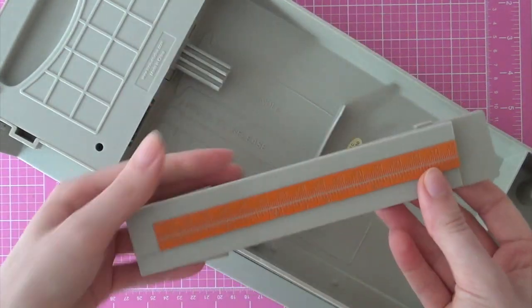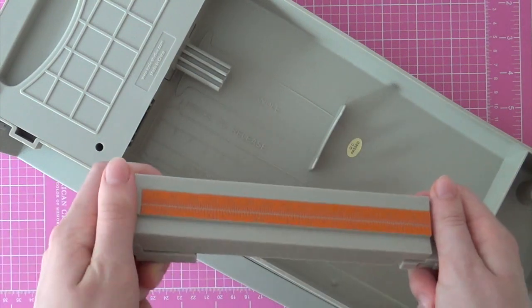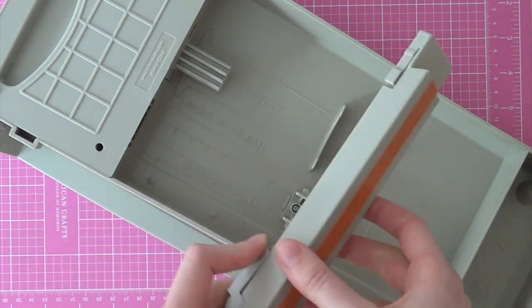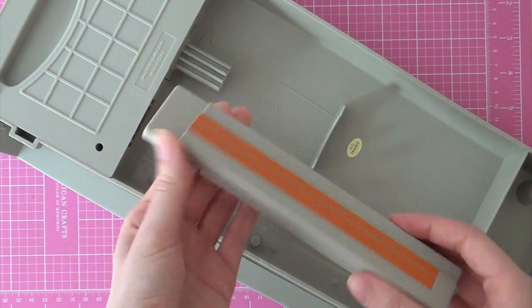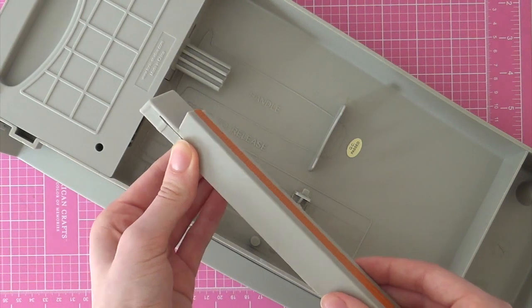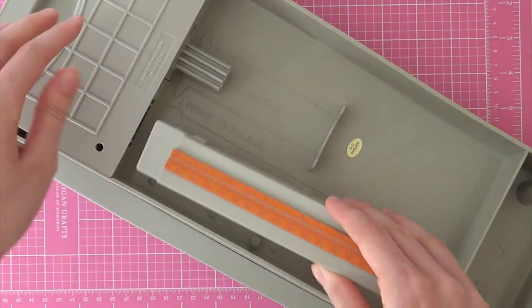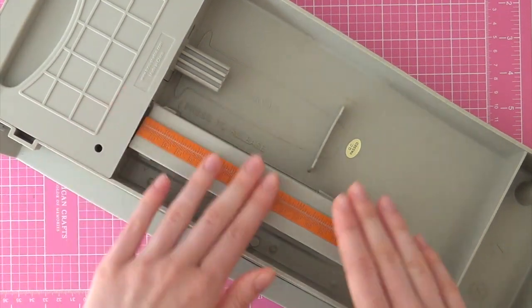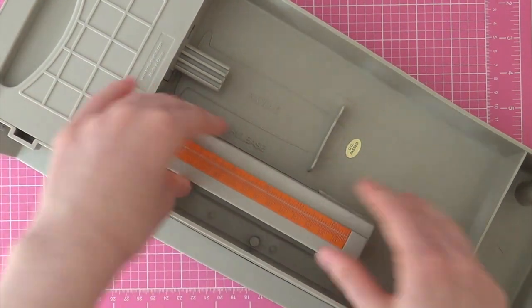So I'm going to quickly show you how you can store this detachable extension arm on the bottom of your paper cutter. So over here you have these two little knots and you can just slide these over here and then it's stored.